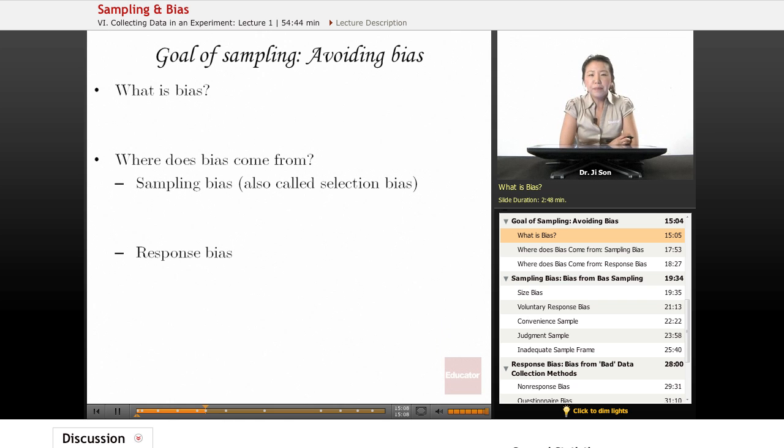Let's talk about the goal of sampling. The big goal of sampling, whenever you're trying to do sampling, is to avoid bias. We want to avoid bias.